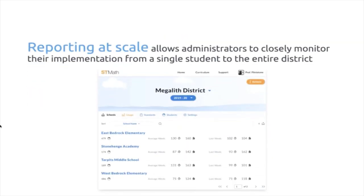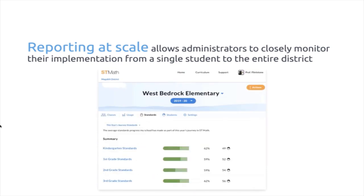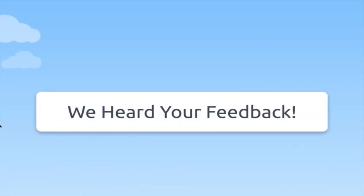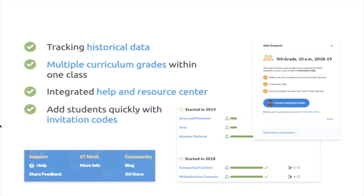An administrator can see at a large scale from a district perspective, a school perspective, a classroom perspective, and a student perspective of how the implementation is progressing. We heard your feedback. We now have signing out in one click, automatic progress savings — so no matter if the Wi-Fi is down or the internet or electricity is out, progress is saved and stored — and accessible in-game tools, so there's no more triple clicking. A student's content grade level is hidden; only the teacher would know if a student was on a different grade level. We've added historical tracking data, multiple curriculum grades within one class, an integrated help and resource center inside our ST Math teacher console, and invitation codes sent to students to link them up to a class — super quick and easy.